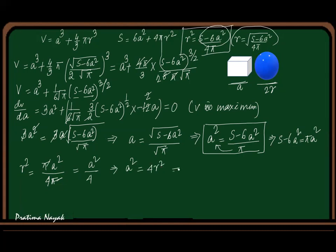Taking the square root: A = 2R. So the ratio A : 2R = 1 : 1. This is the answer to the question.